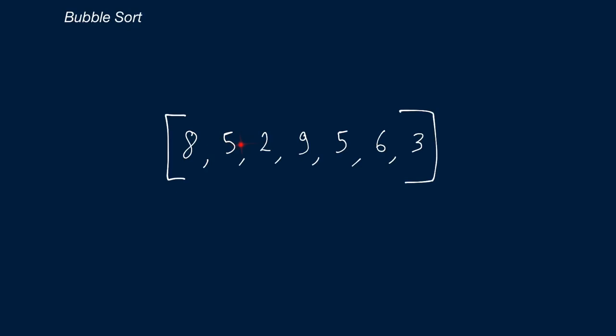We swap the numbers in place, and then we continue traversing the array. Once we've finished traversing the array once, we ask ourselves: did we perform any swaps? Were any two numbers out of order in this particular iteration? If yes, that means the array was not sorted, so we have to redo our entire iteration once more. If we didn't do any swaps, then the array was sorted and we're done — we can just return the array.